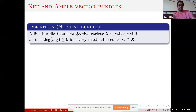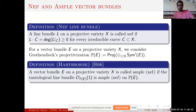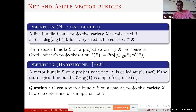A line bundle is nef if its intersection with every irreducible curve is non-negative. Hartshorne extended this definition of ampleness for higher-rank vector bundles on a projective variety: he considered the Grothendieck projectivization and called a vector bundle E ample if the associated tautological line bundle is ample on P(E). Similarly, E is called nef if the tautological line bundle is nef on P(E). The question is: given a vector bundle on a smooth projective variety, how does one determine whether E is ample or nef?